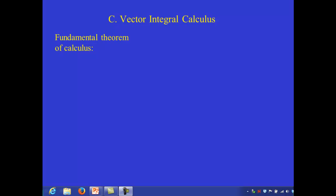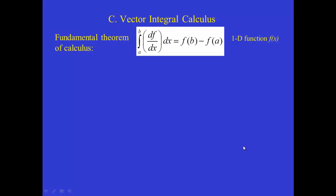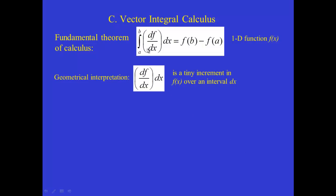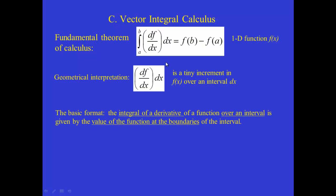Vector integral calculus begins with a reminder that the fundamental theorem of calculus for a one-dimensional function f of x looks like this. This is one way of defining the derivative. The geometrical interpretation is that when we integrate the derivative of a function over a small increment dx, it introduces a change in the function as we move from one point in space to another. The slope multiplied by the displacement gives us the difference in the function between the beginning point and the end point.